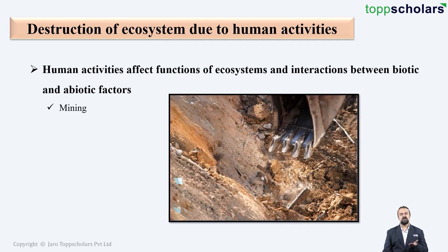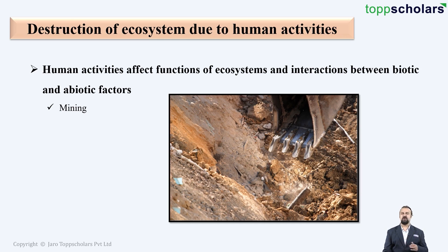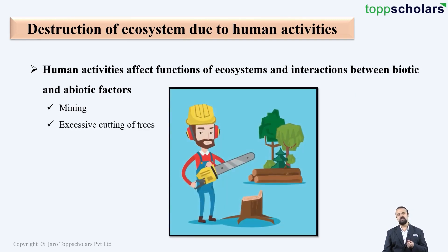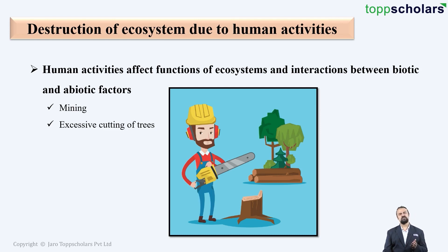Let us take a look at some examples of human activities causing the destruction of ecosystem. The first one is mining. Mining exploits the natural resources present on our planet and destroys the forest and nearby natural ecosystems. Another example is excessive cutting of trees — deforestation — which destroys the livelihood of various animals living in the forest. Other examples are pollution of water as well as pollution of air.